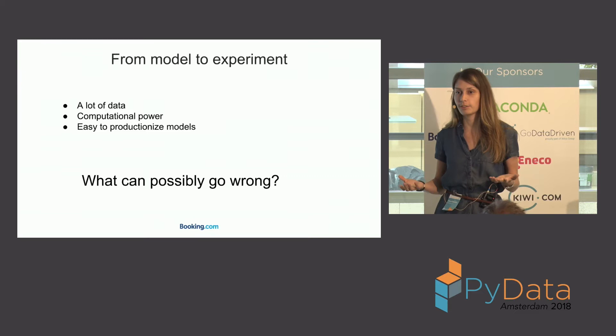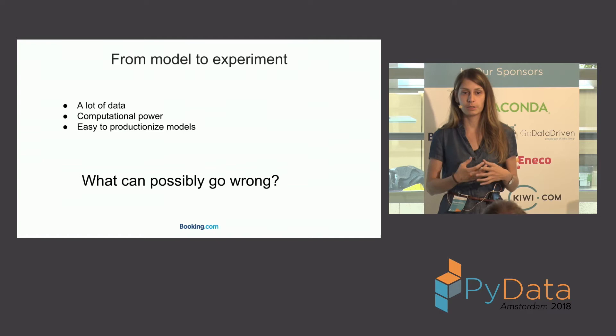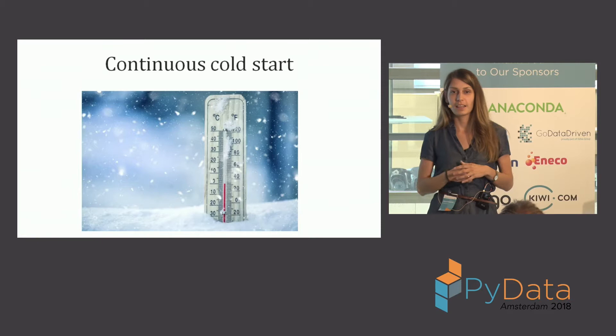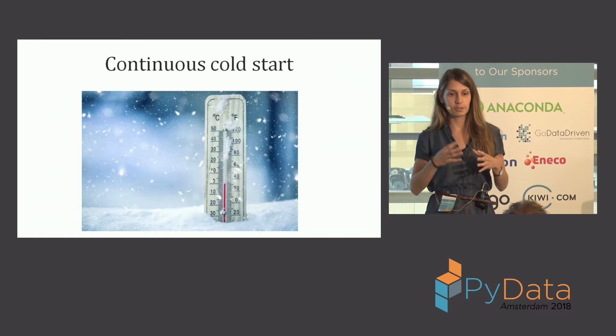So it sounds like we've solved all the problems — what else can actually go wrong when you want to build your model in production? Actually, the answer is: almost everything can go wrong. Let's start with the first problem: where you want to apply your machine learning model to improve the user experience.